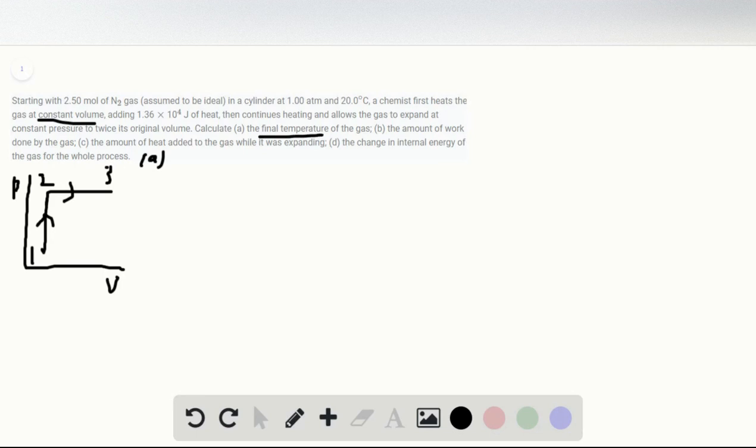In part A, we want to find the final temperature of the gas, T3. To figure out this temperature, we need to calculate the quantities one by one. We already know the initial pressure, initial temperature, and amount of gas. It's nitrogen gas, and we also know the amount of heat added to the system.